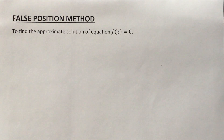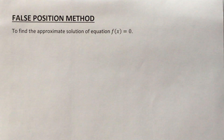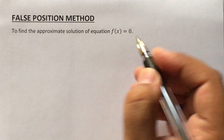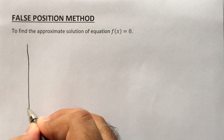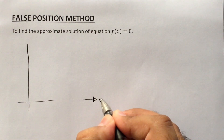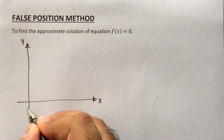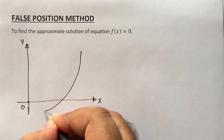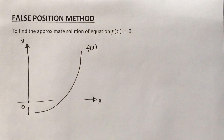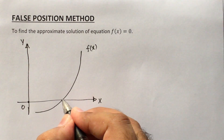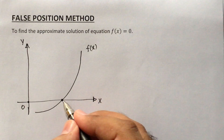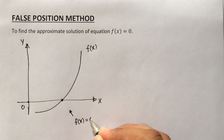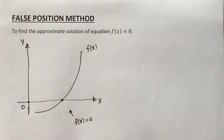In this lesson we are going to discuss the False Position Method. This method enables us to find the approximate solution of equations of the form f(x) = 0. Consider the x-axis and y-axis meeting at the origin. The graph of the function f(x) is a line, and the point where this graph crosses the x-axis is our required solution — at that point, the function value equals zero.